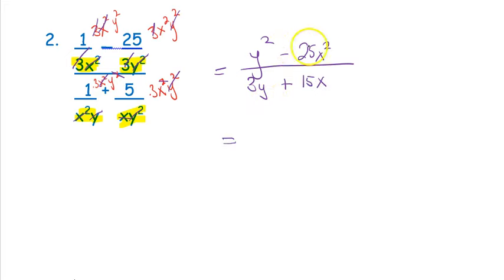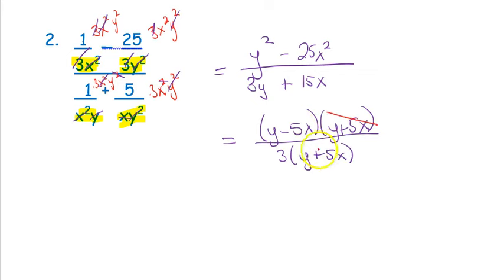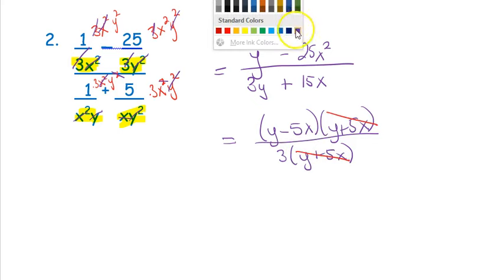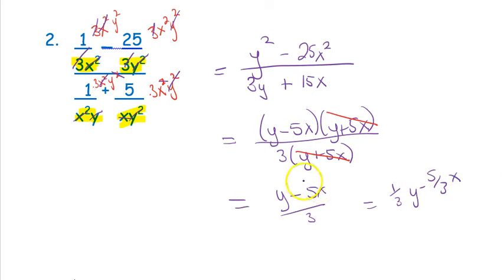The top is a difference of perfect squares, so it factors to (y − 5x)(y + 5x). The bottom has a GCF of 3, leaving 3(y + 5x). The (y + 5x) factors cancel, leaving (y − 5x) over 3. Sometimes I may need that written as (1/3)y − (5/3)x if dealing with something linear, but this form is fine as long as you understand you can rewrite it if needed.